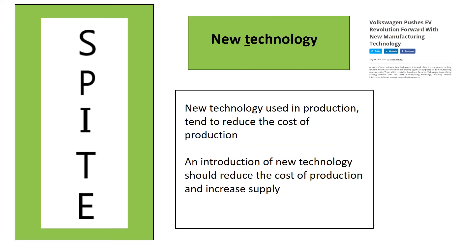Let's take a look at new technology. An introduction of new technology should generally reduce the cost of production and increase supply. Looking at the headline in the news article, Volkswagen would really benefit from new technology to do with electric vehicles. If they had that, one could assume it would lower the cost of production for them and they would be able to increase supply of electric vehicles. The level of available technology will influence the level of supply for firms. If new technology or new machinery is introduced, firms may be willing to increase the level of production, as producing more efficiently should lower unit costs. Therefore there will be a shift to the right on the supply curve.